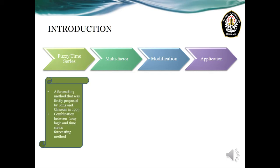Fuzzy time series is a forecasting method that was first proposed by Song and Chisham in 1993. It is basically a combination between fuzzy logic and time series forecasting methods. So if we want to predict data in the future, we have to develop fuzzy logical relationships as the time series forecasting rules, and finally we have to defuzzify the fuzzy sets that we obtained.